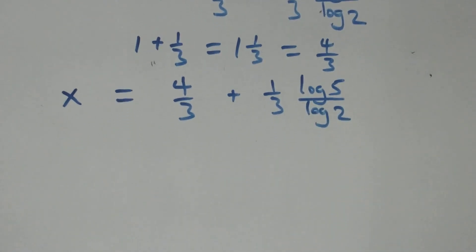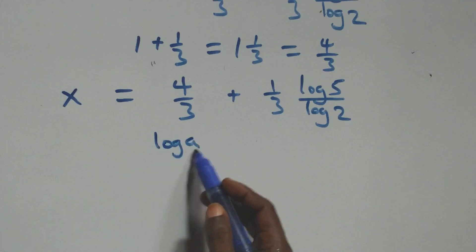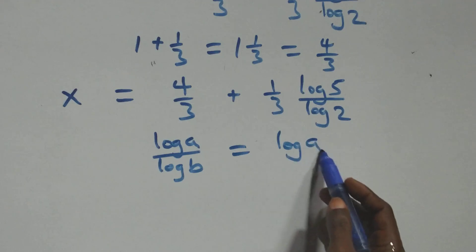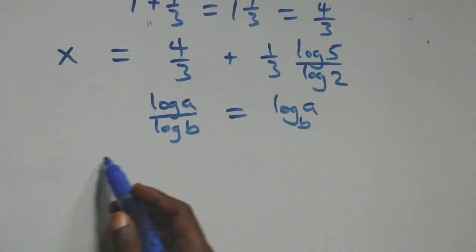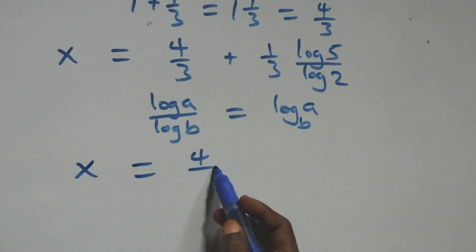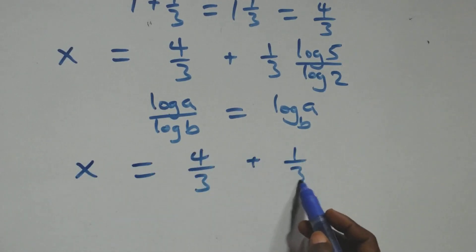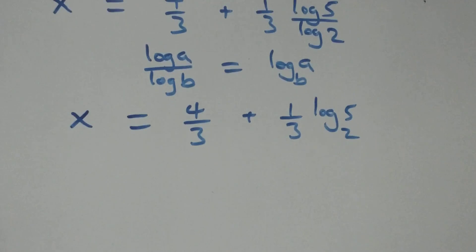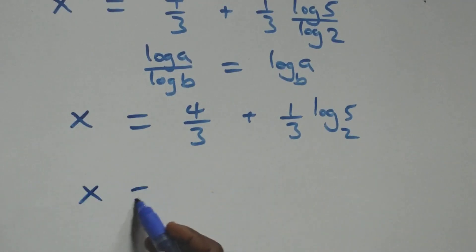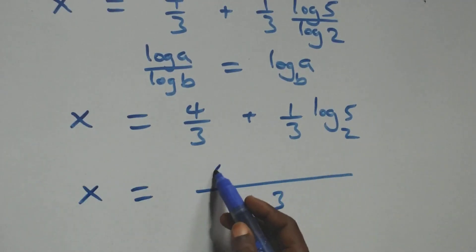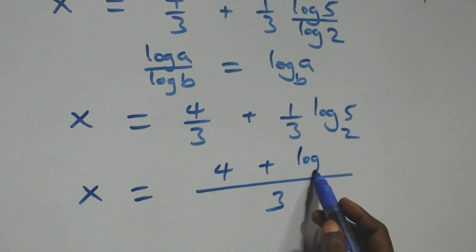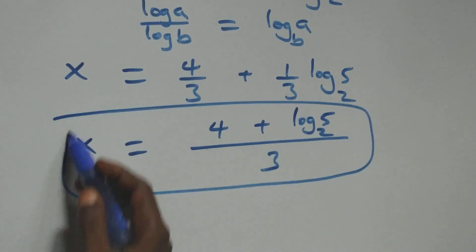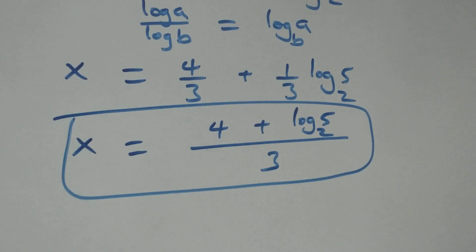We apply the change of base formula: log(a)/log(b) = log_b(a). So log(5)/log(2) = log₂(5). Combining as a single fraction, x = (4 + log₂(5)) / 3.